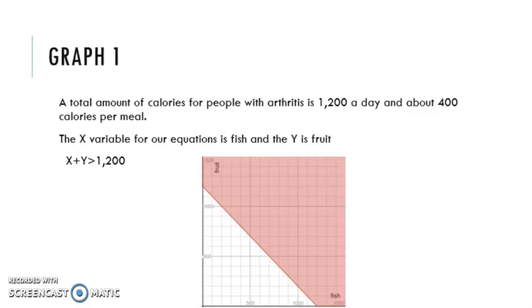The total amount of calories for people with arthritis is 1,200 a day and about 400 calories per meal. The X variable for our equations is fish and the Y is fruit.